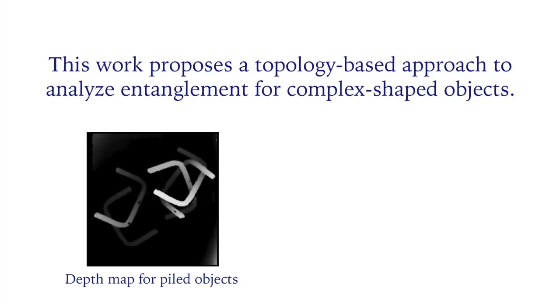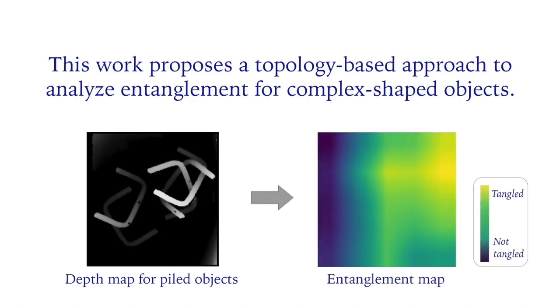This work proposed a topology-based approach to analyze entanglement for complex shaped objects. Our method can generate suitable grasps for robots to pick up only one object by constructing a topology feature map.